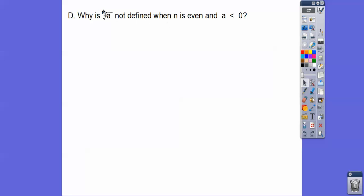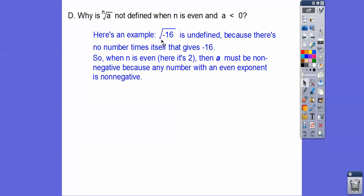Why is it not defined when the index is even and the radicand is negative? When a is less than zero, consider the square root of negative 16. It's undefined because there's no number times itself that gives a negative 16. Four times four is 16, and negative four times negative four is also 16 — I can never multiply the same number by itself and get a negative result. So when the index is an even number, a must be non-negative, otherwise we get undefined values — which is something we'll deal with in calculus.